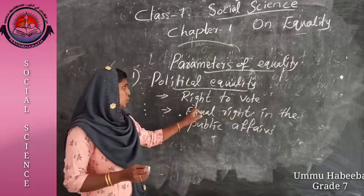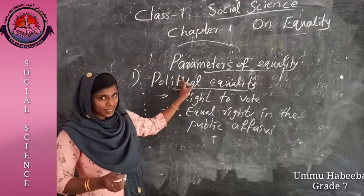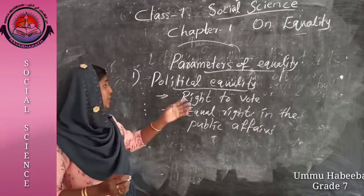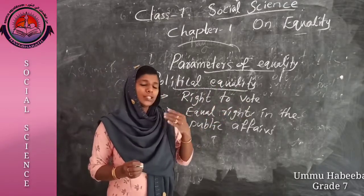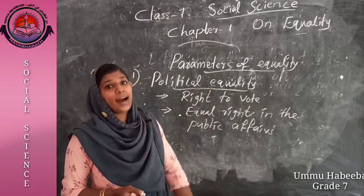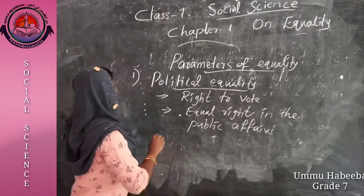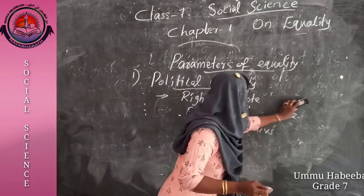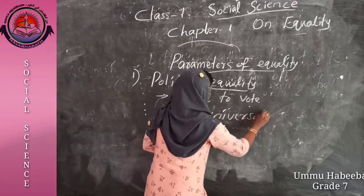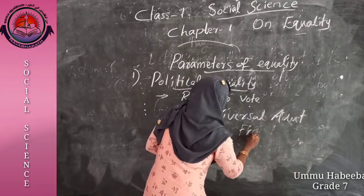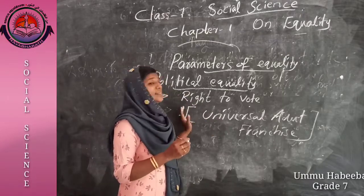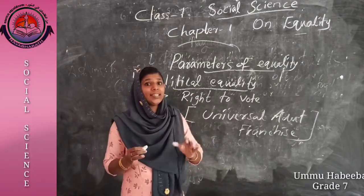The most important concept related to political equality is a constitutional provision — the constitution provides the right to vote. This right to vote is called universal adult franchise. So the right to vote is called universal adult franchise.